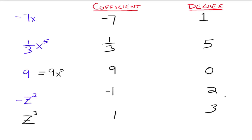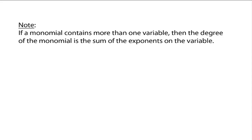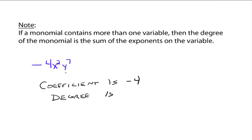That's it for coefficient and degree with one variable. What happens when we have two variables or more? If a monomial contains more than one variable, then the degree of the monomial is the sum of the exponents of the variables. For example, the coefficient is negative 4, and the degree — since there are two variables — we add the exponents together: 2 plus 7 gives you 9. That's how we calculate the degree with more than one variable.